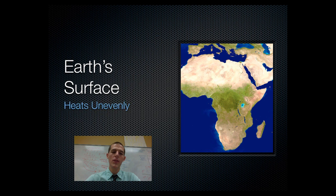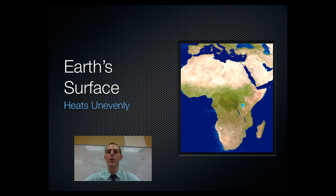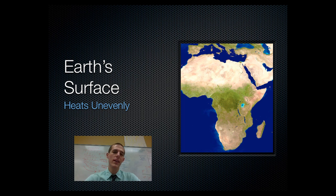First thing about earth's surface: it heats unevenly. I know this seems like a 'duh' statement, but it's central to everything we're going to do today. If you've ever walked outside in the summer barefoot and walked onto black pavement, it's going to be hot — it's going to burn your feet. You'll immediately jump into the grass. So the pavement is getting much hotter than the grass, even though they both have the same sunshine beating down upon them.